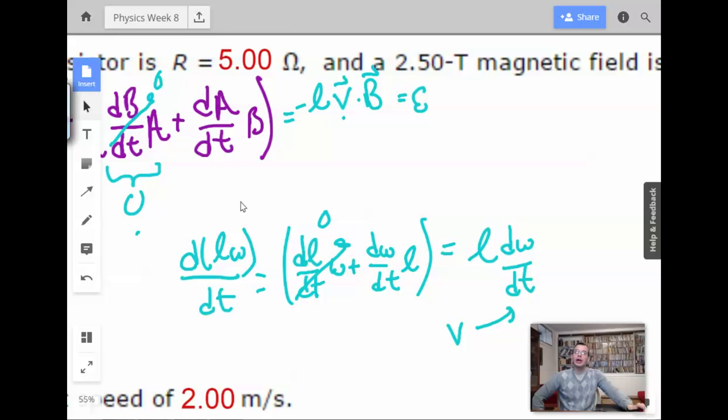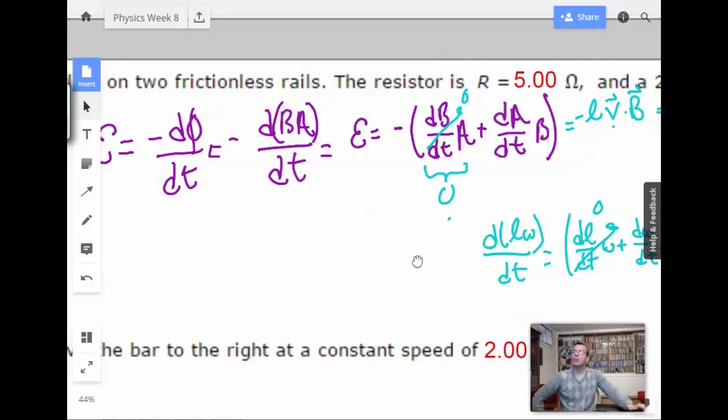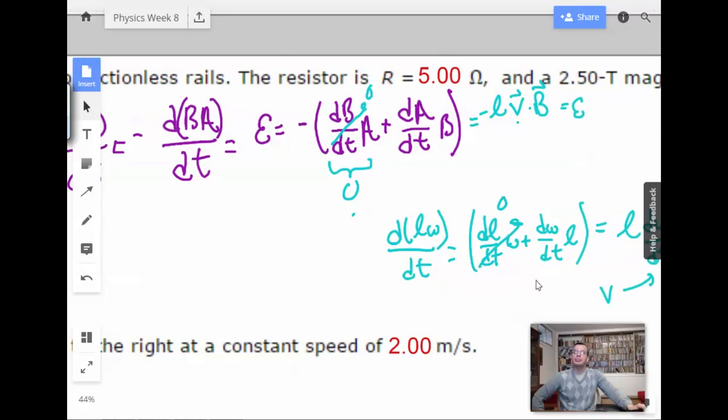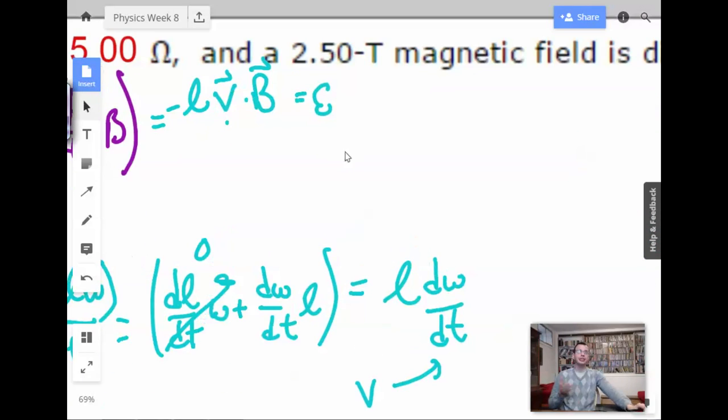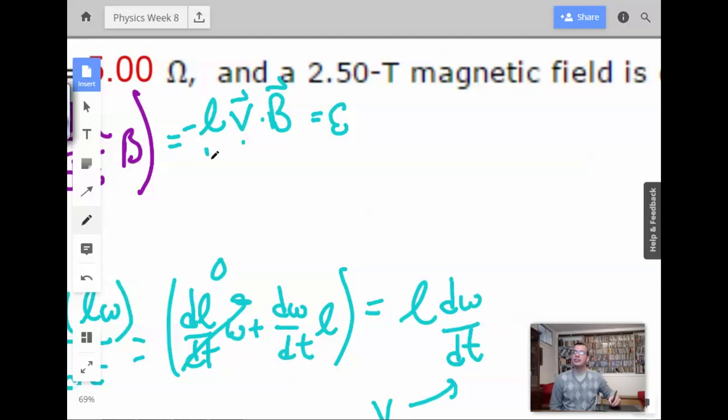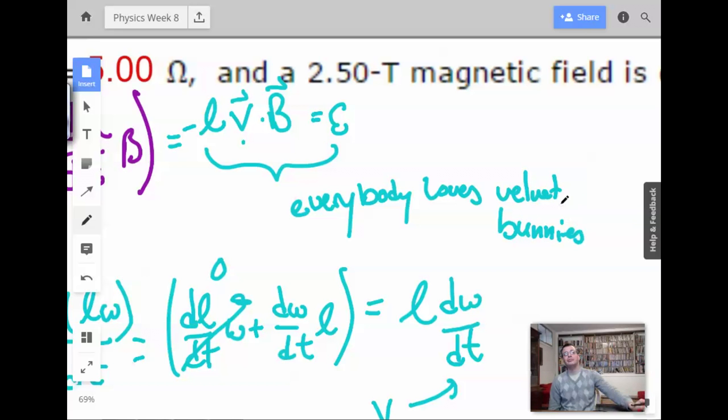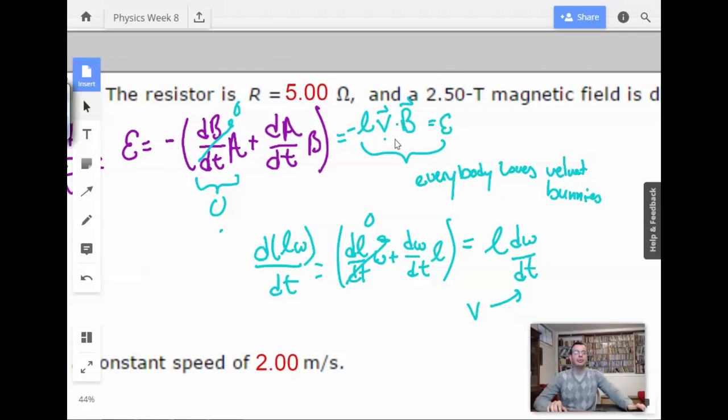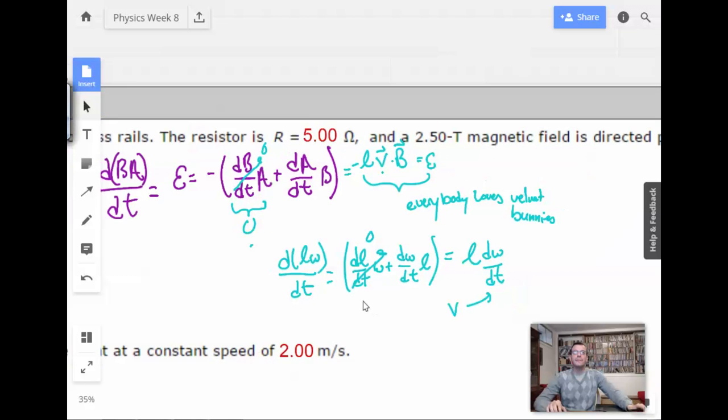And that equals... I probably should have a little negative there just in case. Yeah. All right. So, now... This is going to... Now, the way... This comes up a lot. And the acronym that we use in the Navy for this is everybody loves velvet bunnies. I love velvet. I love bunnies. Everybody loves velvet bunnies. E-L-V-B. This is how you know the induced EMF due to a sliding rod, basically. Okay.